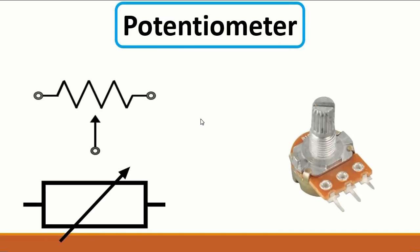Then we have the potentiometer. The potentiometer is a variable resistor component that we can use to adjust the resistance. This is its symbol — it could be this one or this one, but this is the frequently used symbol.